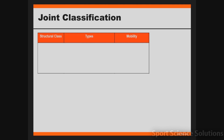There are three different structural classifications. The first is called a fibrous structural classification. A fibrous joint is joined by fibres, and there are three different types of fibrous joints. The first type is called a suture joint, which means short fibres. Looking at the picture below, we can see an example of a suture joint which occurs in the skull.